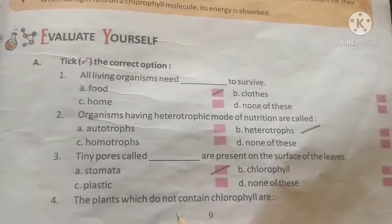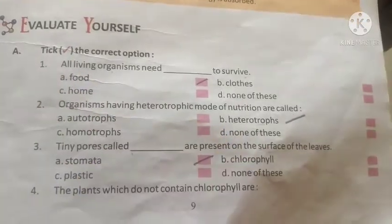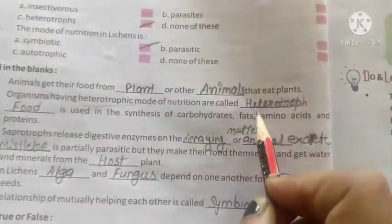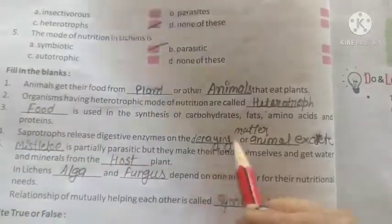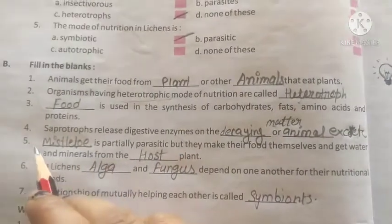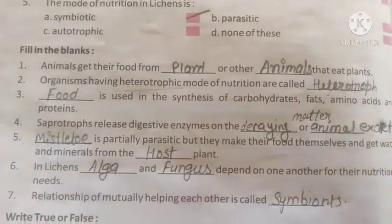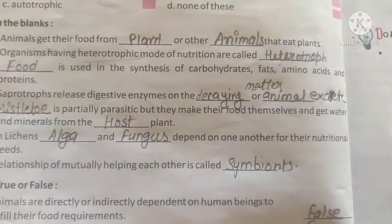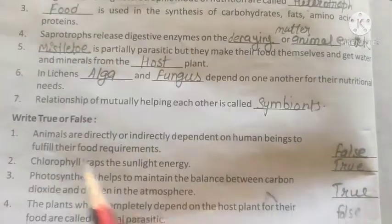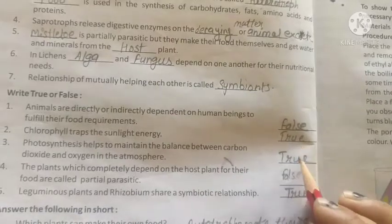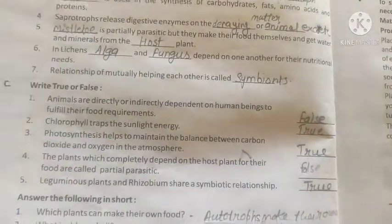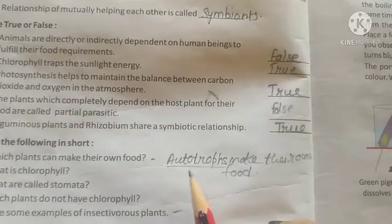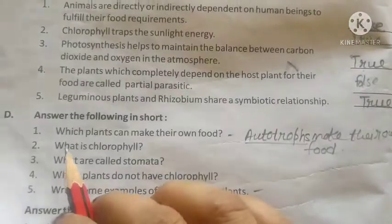In the previous lecture, a homework was given. Today's homework: tick the correct option for plants and animals, heterotrophs, food, decaying matter, animal extract, mistletoe, algae and fungus, and symbiont. True and false answers: first — second true, third true, fourth false, fifth true. Answer the following in short: first question — which plants can make their own food? Autotrophs make their own food.